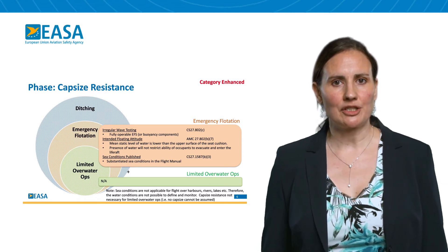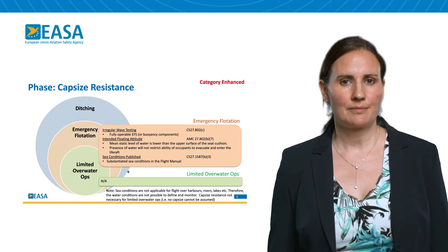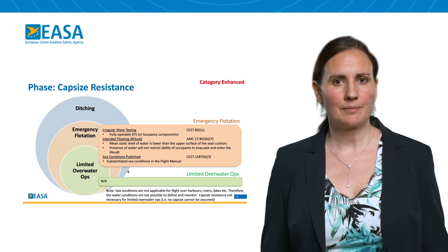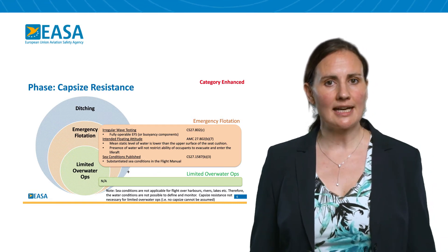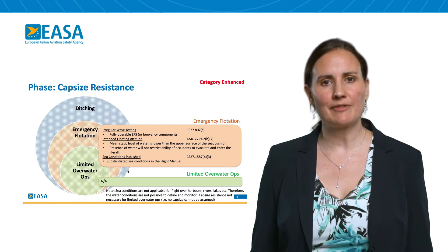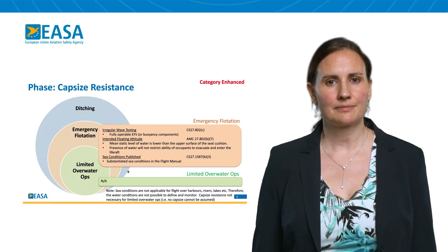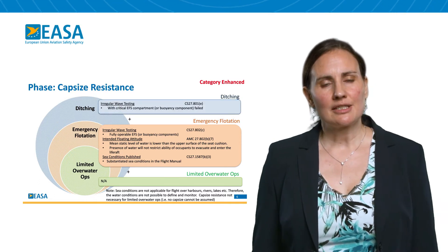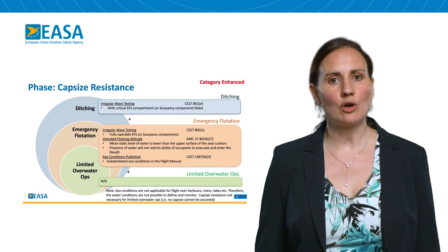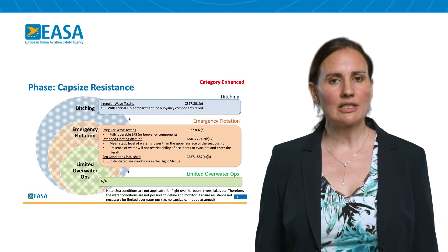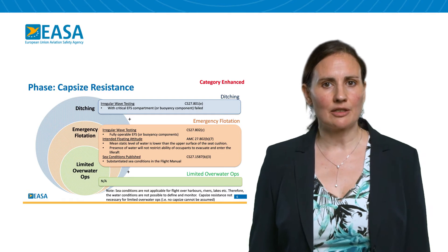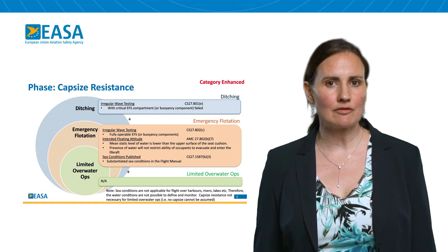This seakeeping demonstration should be carried out in the intended floating attitude. In the intended floating attitude, it is not necessary to have all emergency exits above water. A wet floor concept is acceptable, provided that the mean static level of the water is below the seat cushion and the presence of water will not restrict the occupants from evacuating and entering the life raft. For ditching, a capsize resistance demonstration is also necessary, but this time also considering the functional failure of the emergency flotation system or buoyancy component. Target probabilities are adopted from CS 27 801.